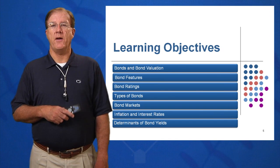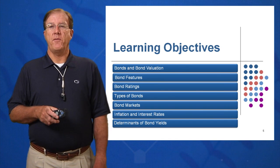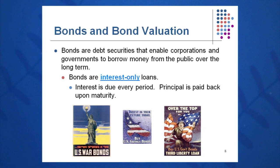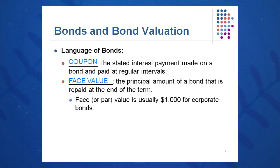There are seven learning objectives in this chapter, so it's a very busy chapter with some very good information. First, bonds and bond valuation — our first goal to understand. Bonds are debt securities and they're interest-only loans. They enable corporations and governments to borrow money from the public over the long term, and for that we get a return. Interest is paid every period, and the principal gets paid back at the end of the term at maturity. There's a whole language affiliated with bonds that we have to learn.